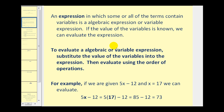To evaluate an algebraic or variable expression, we substitute the value of the variables into the expression and then evaluate using the order of operations. For example, if we have the expression 5x minus 12 and x equals 17, we replace the variable x with the value of 17 and then evaluate. So here we have 5 times 17 minus 12. 5 times 17 is 85, and then 85 minus 12 is equal to 73.